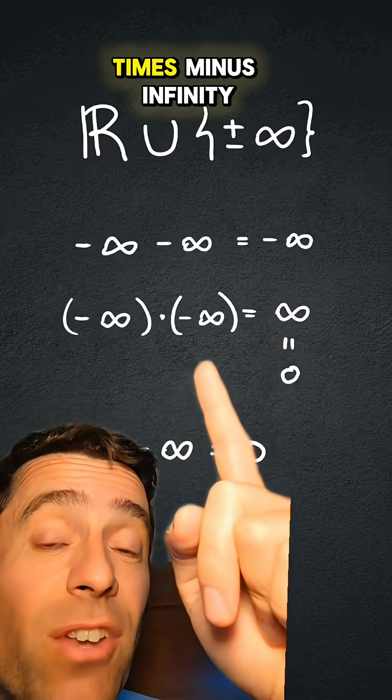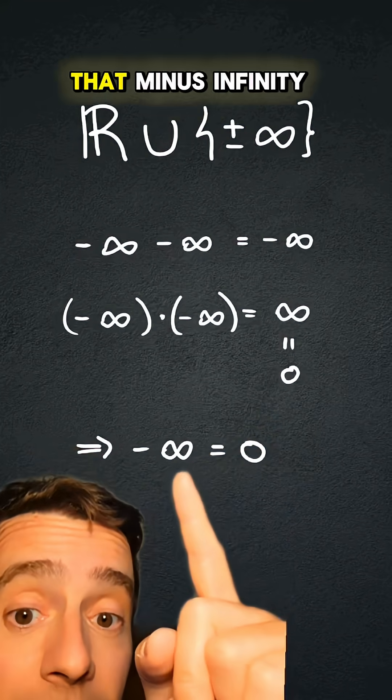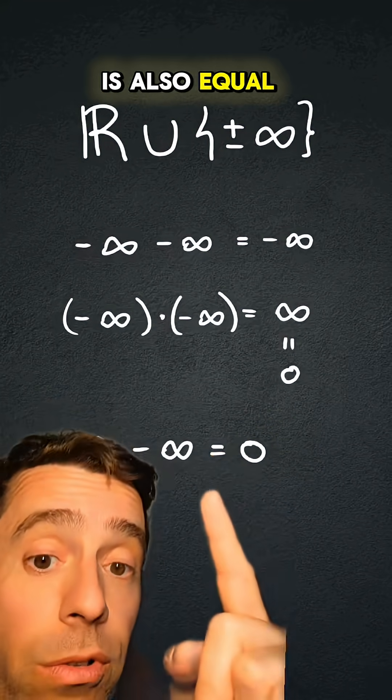but minus infinity times minus infinity would be infinity, which is equal to zero, which would mean that minus infinity is also equal to zero.